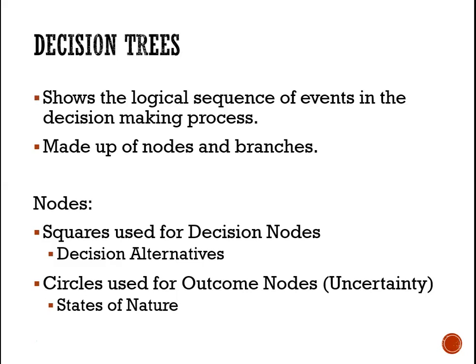Decision trees show the logical sequence of events in the decision making process. They are made up of nodes and branches. For the nodes we have two types: squares and circles. Squares are used to represent decisions, and circles are used to represent uncertain outcomes or our states of nature.